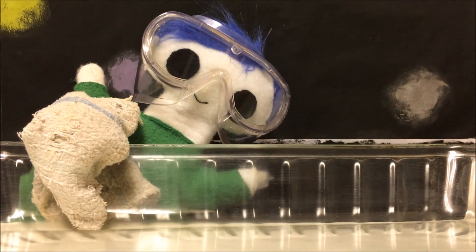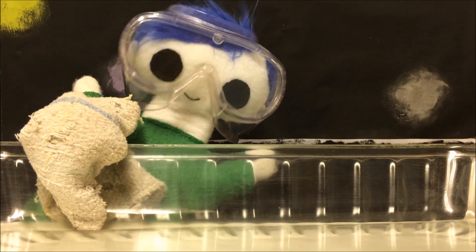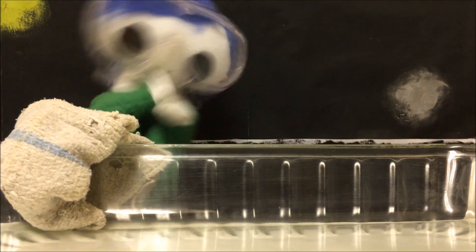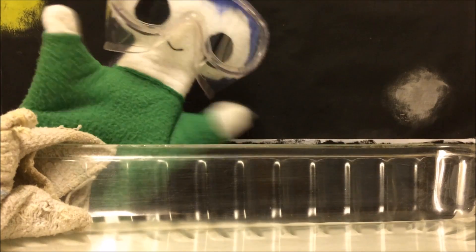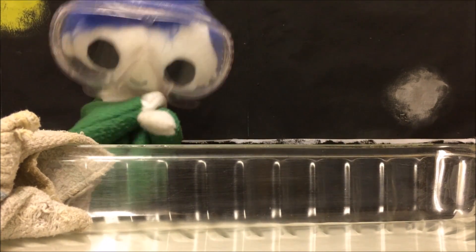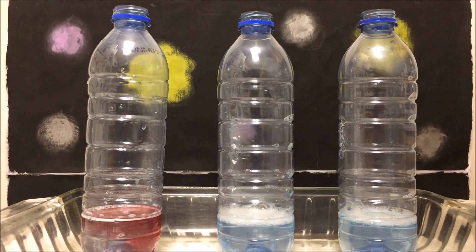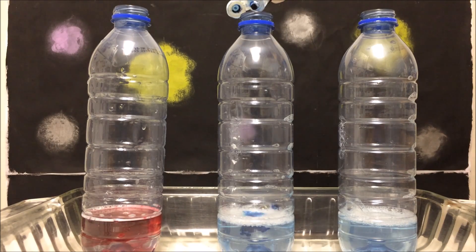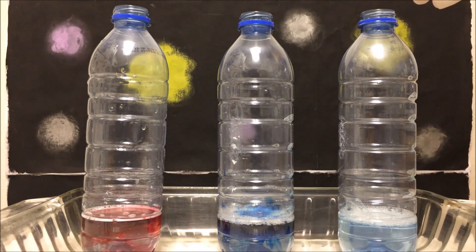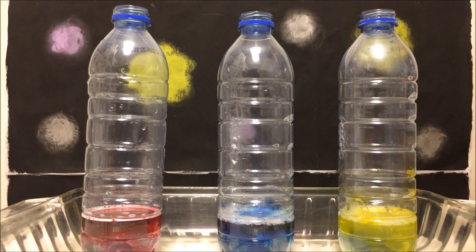Odie, do you want to make the elephant toothpaste experiment again? This time let's try it with different colors. Let's add some red food coloring to one bottle, some blue food coloring to the next bottle, and some yellow food coloring to this bottle.